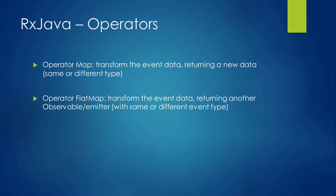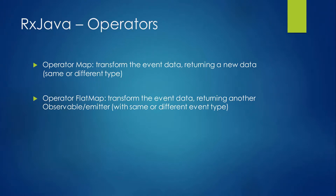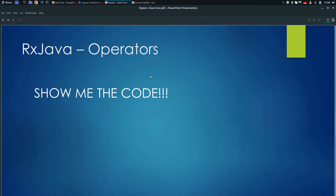If you use map, you pass a function that receives the event and transforms this number to something else — could be another number, a string, an object, anything — but you return a value. On the other hand, with flatMap you must return another Single with some information inside, could be a string, integer, object, or whatever. So the function you pass to flatMap needs to return another Single. That's the idea. Let's see some code.